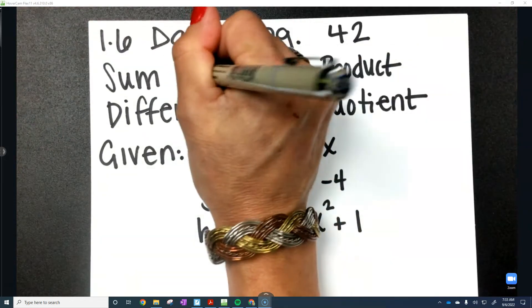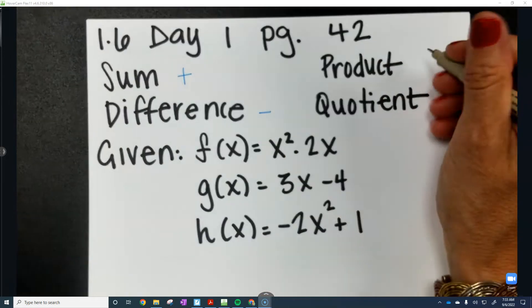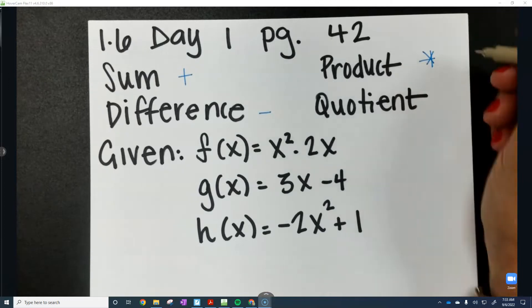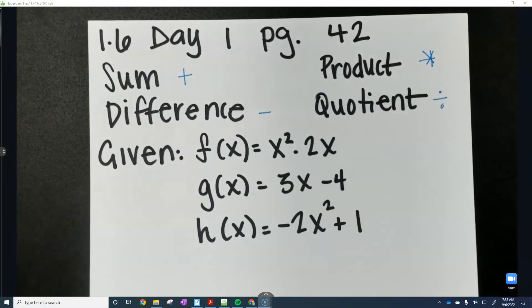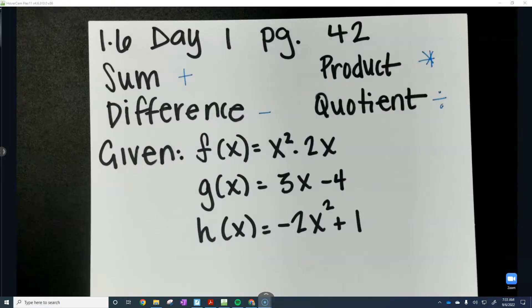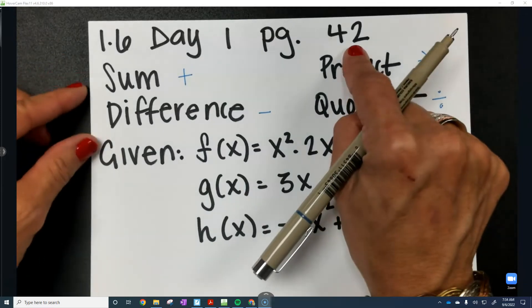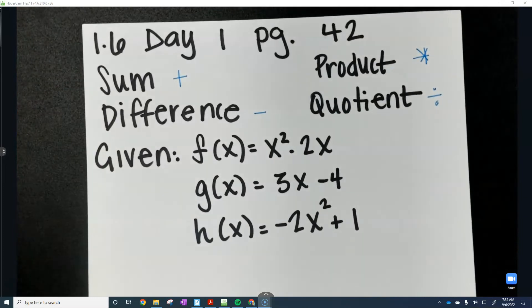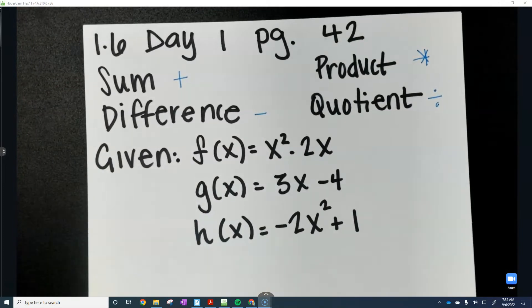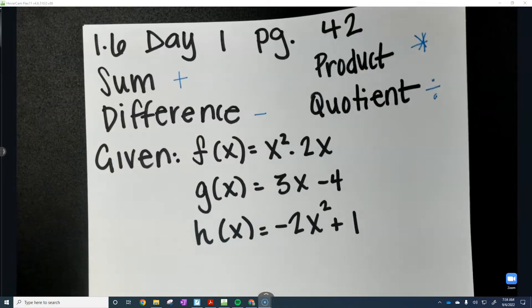The sum means you're adding, difference is subtract, product of course is multiply, and quotient means division, and that's at the top of your page on page 42. Okay, so given these three functions, we're just going to do some basic math on these.